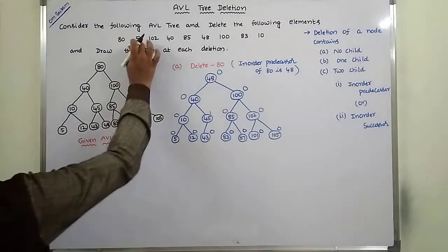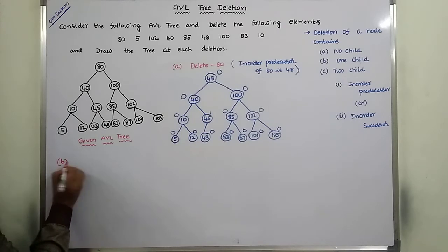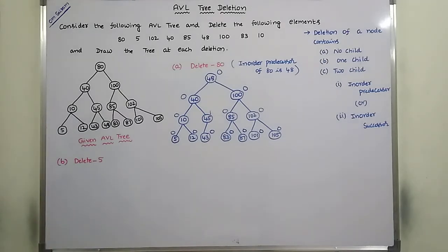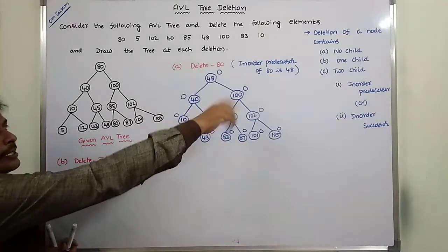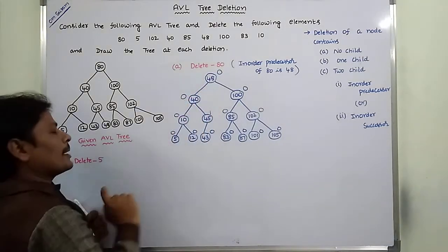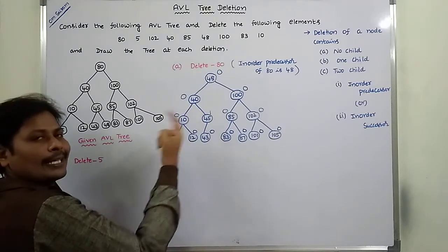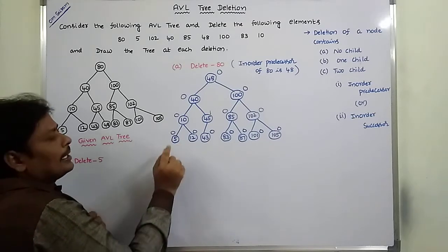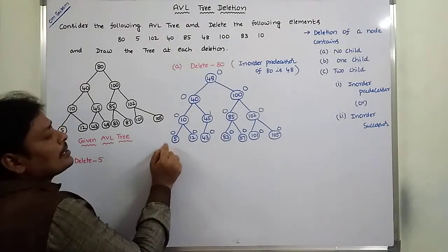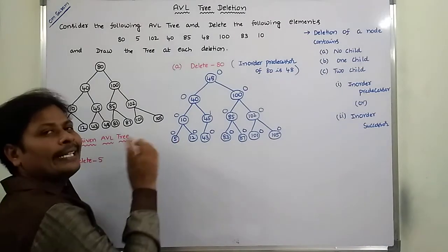Next, we have to delete element 5 from the existing tree. First, we check the location of element 5. 5 is compared with 48 — it is less, go to the left subtree. 5 is compared with 40 — it is less, go to the left subtree. 5 is compared with 10 — it is less, go to the left subtree. Here 5 is compared with 5 — they match. The deleted node has no left child and no right child, so we simply delete that node.